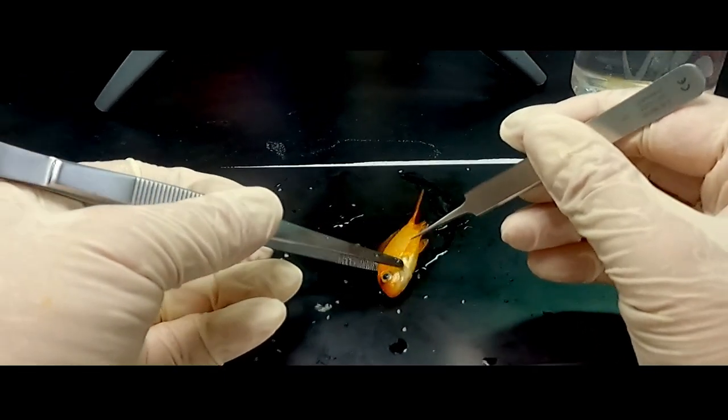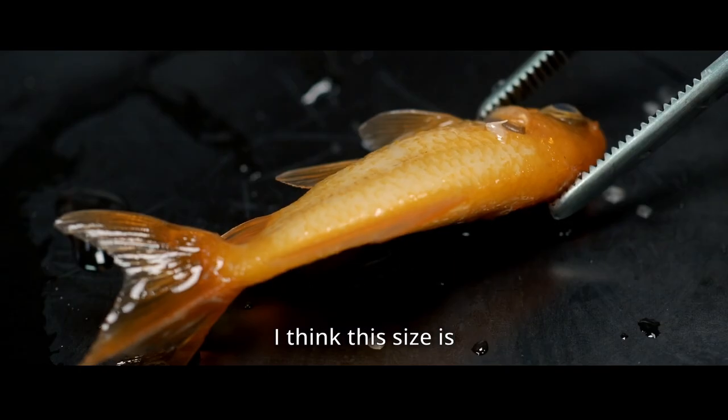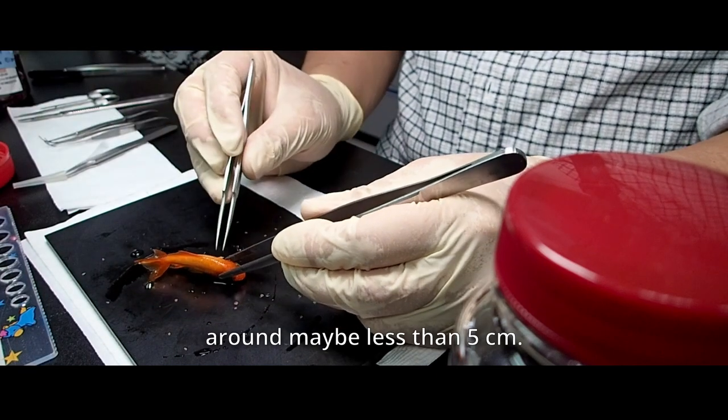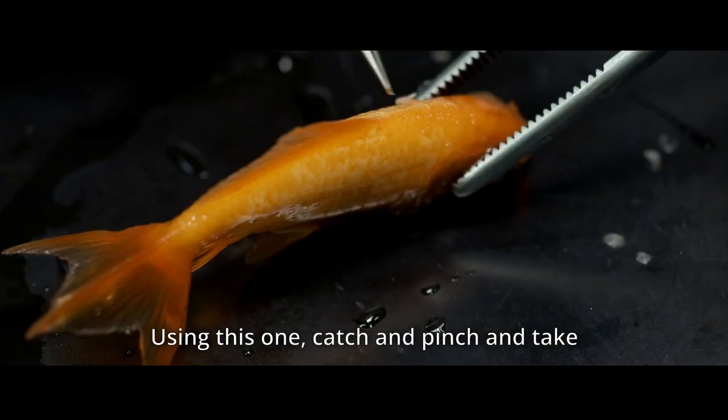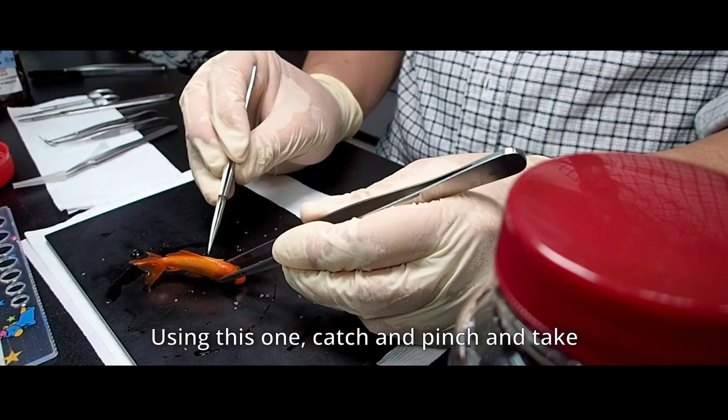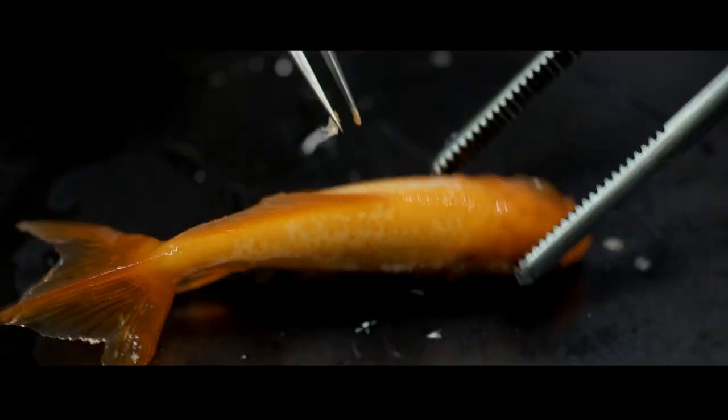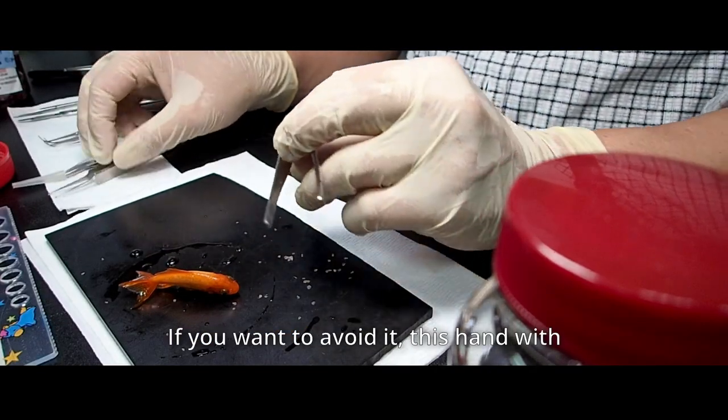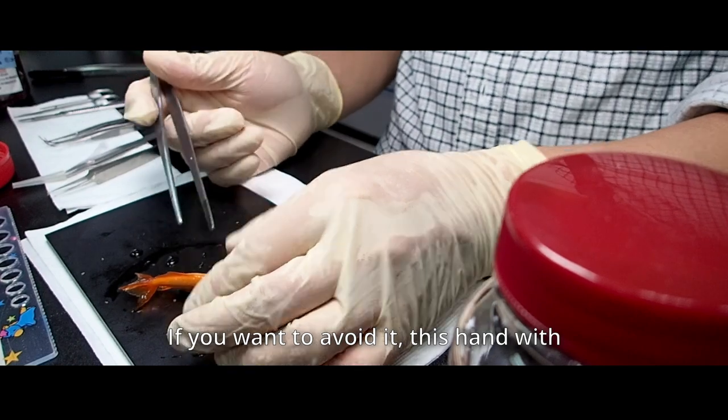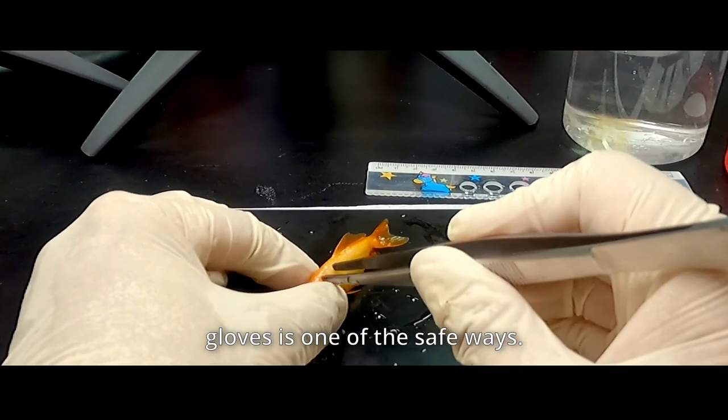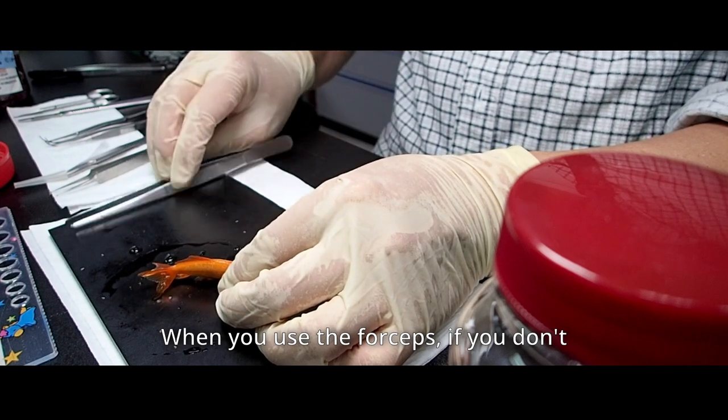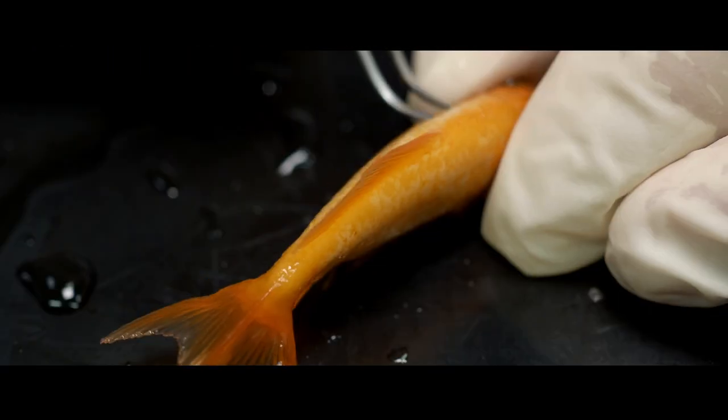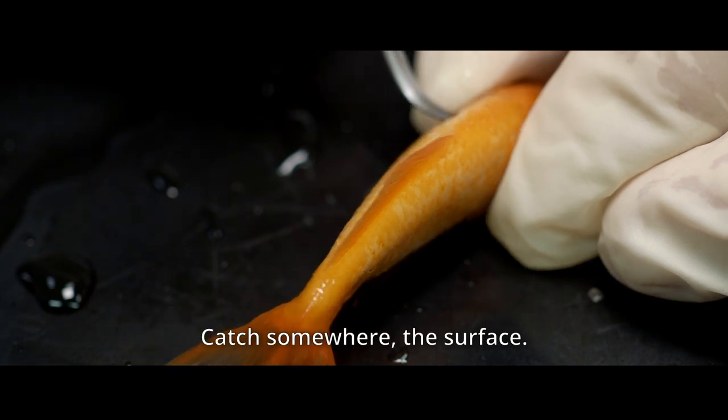I think this is the size around maybe less than five centimeters, like a tiny sample. And using this one, catch and pinch and take the surface of the skin is one of the ways. And if you use this one, really strongly pinch and sometimes crush the bone. And if you want to avoid it, this hand with gloves is one of the safe ways. And when you use the forceps, like this, or if you don't want to damage, like this, just you use this and catch the surface, somewhere, the surface.